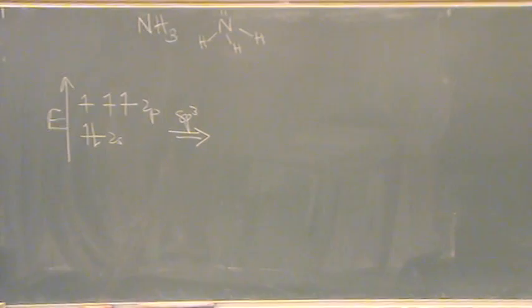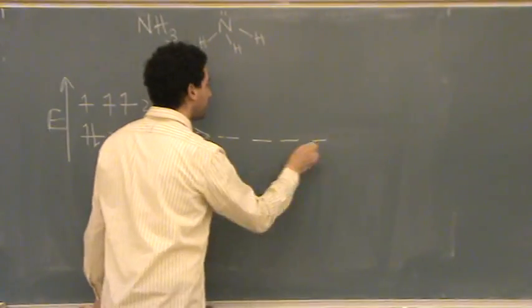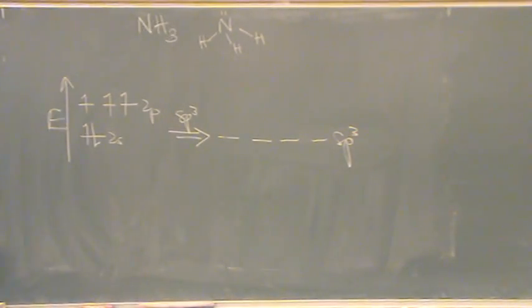SP3 hybridizes because there's four groups, tetrahedral. So that gives us four SP3 hybrid orbitals.